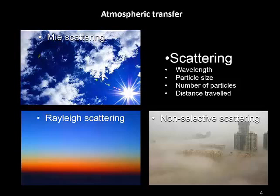There's also non-selective scattering, where there's a wide range of very large and small particles relative to the wavelength of the radiation, resulting in a scattering that produces a grey mess that we know as smog. This scattering is affected by the wavelength of the radiation, the particle size, the number of particles, and the distance travelled. While it produces interesting phenomena for observers on Earth, it also creates problems in remote sensing.